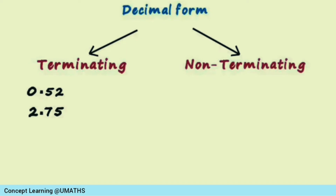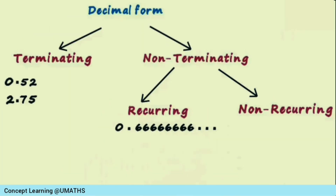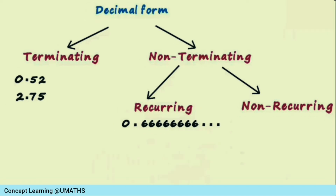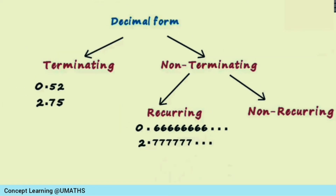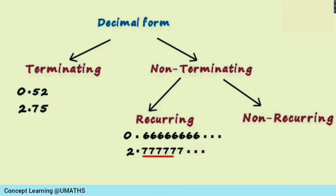In terminating cases, the remainder is 0 and the process of division ends — they do not go on and on. Non-terminating decimal forms are again classified into recurring and non-recurring decimals. Recurring would be 0.6666... — it does not terminate and the digit 6 is repeating. Since 6 is repeating infinitely, it is called recurring. Another example: 2.7777... — since 7 is continuously going on and repeating, it is non-terminating recurring.